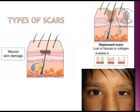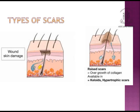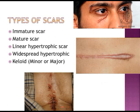Scars can be depressed scars, as seen in this patient, or they can be keloid or hypertrophic scars, as seen here. There can be an immature hypertrophic scar seen in the lower lid and upper lid, or a linear hypertrophic scar or keloid seen on the sternum.